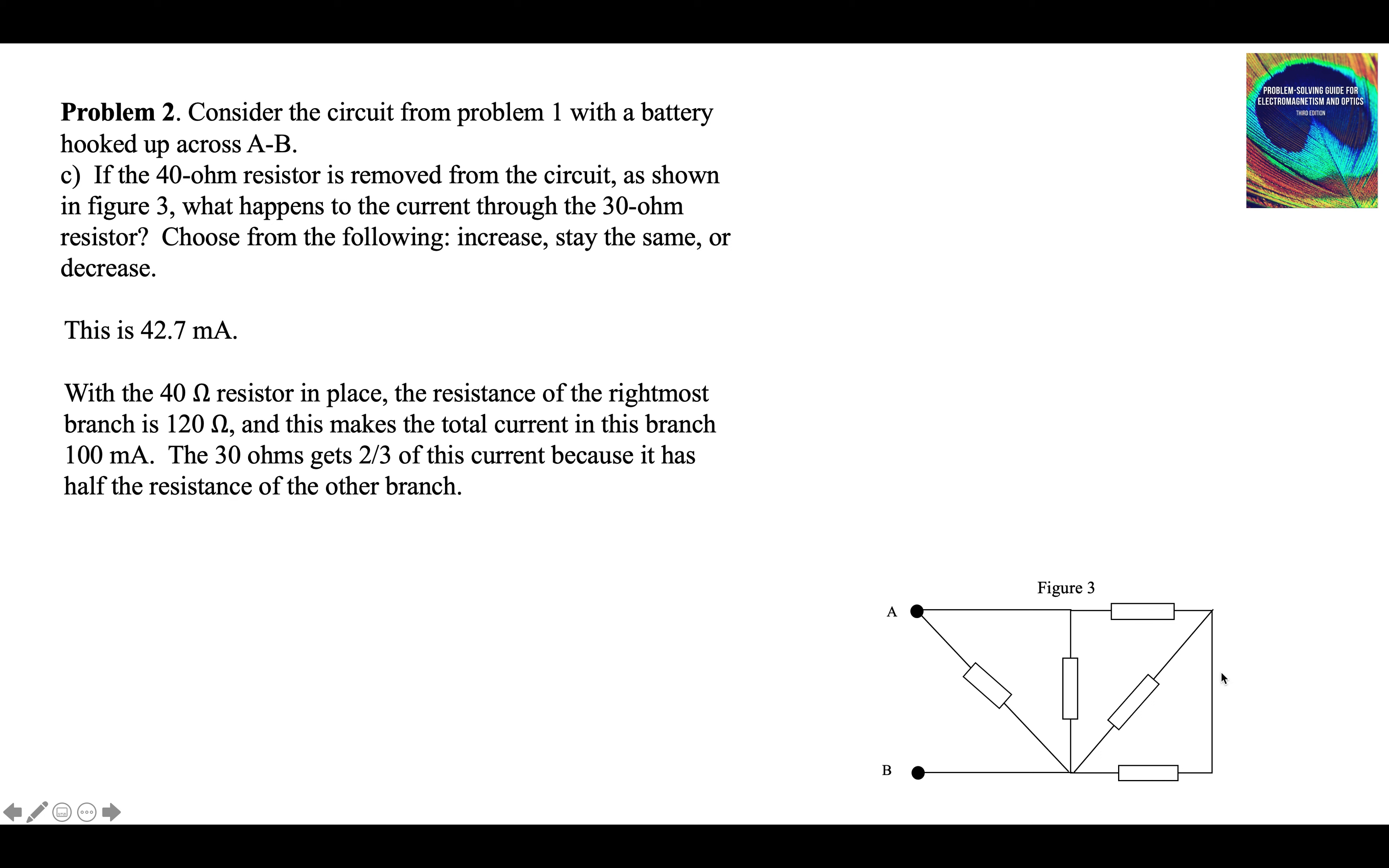With the 40 in place, the whole resistance was 120 ohms. And the 30 ohms got two-thirds of that. With the 40 ohm resistor removed, the resistance of this branch is now decreased, so it gets more current.